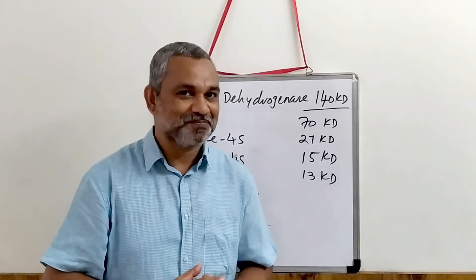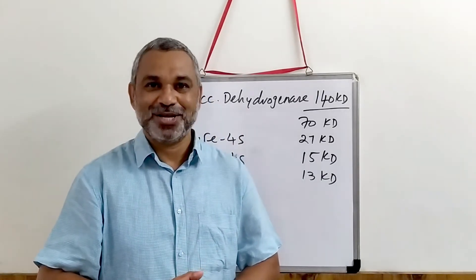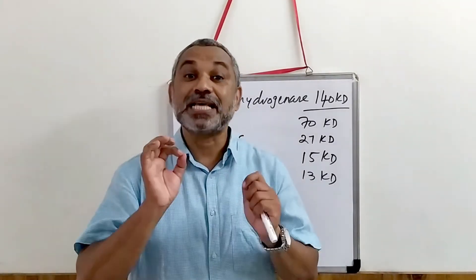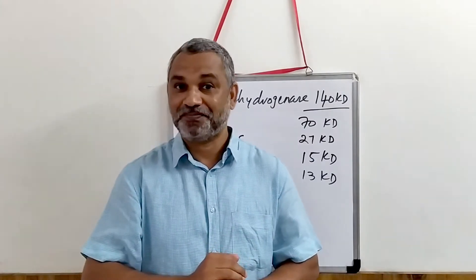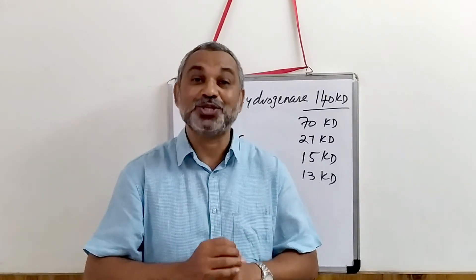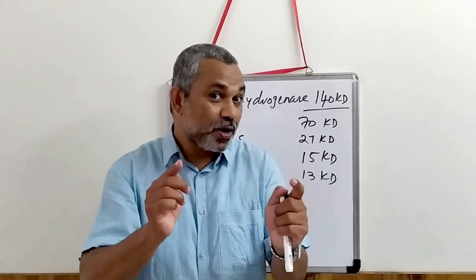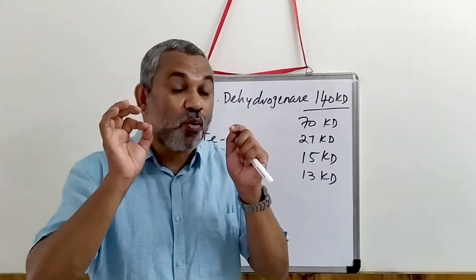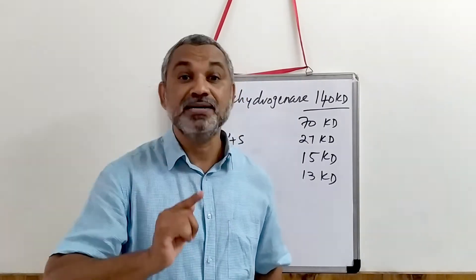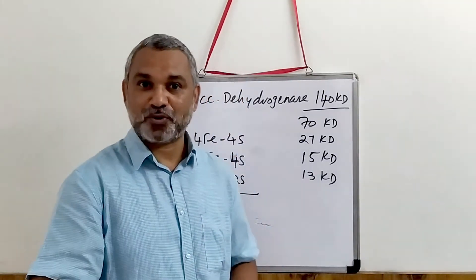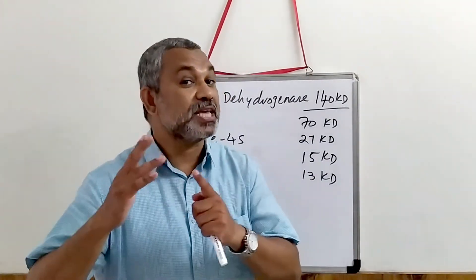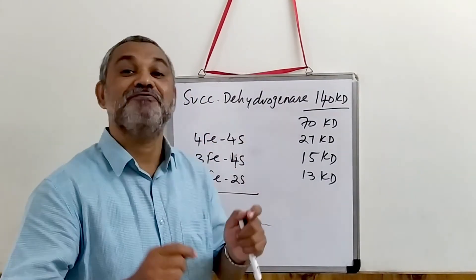Something very interesting about this enzyme is that it also has another name: succinate dehydrogenase. You have come across this name in the TCA cycle, in the conversion of succinate to fumarate. Succinate dehydrogenase is one and the same as succinate UQH2 oxidoreductase. Therefore, this enzyme is the only membrane-bound enzyme in the TCA cycle, and it gives a direct link with the electron transport chain. If somebody asks which enzyme connects the TCA cycle with the electron transport chain, this is the enzyme.